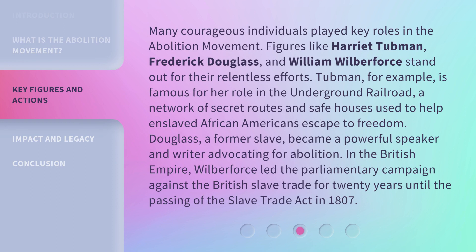Many courageous individuals played key roles in the abolition movement. Figures like Harriet Tubman, Frederick Douglass, and William Wilberforce stand out for their relentless efforts. Tubman, for example, is famous for her role in the Underground Railroad, a network of secret routes and safe houses used to help enslaved African Americans escape to freedom. Douglass, a former slave, became a powerful speaker and writer advocating for abolition. In the British Empire, Wilberforce led the parliamentary campaign against the British slave trade for 20 years until the passing of the Slave Trade Act in 1807.